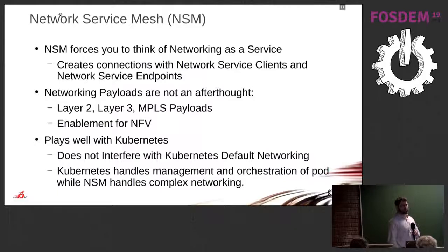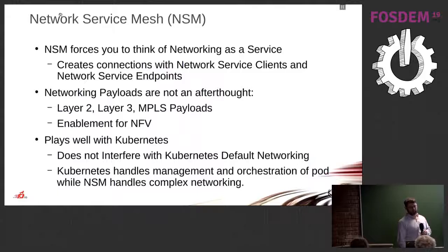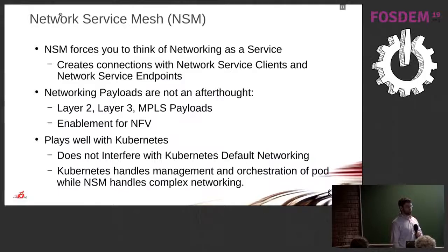Network Service Mesh is a service abstraction — a key point is that it abstracts out your service and makes you think of your network as a service. Because of the upfront planning and design, the networking payloads are not an afterthought. It is designed upfront to feed additional layer 2 and MPLS payloads into a container. It plays well with Kubernetes, doesn't require any changes to Kubernetes, and doesn't affect the Kubernetes default network at all.